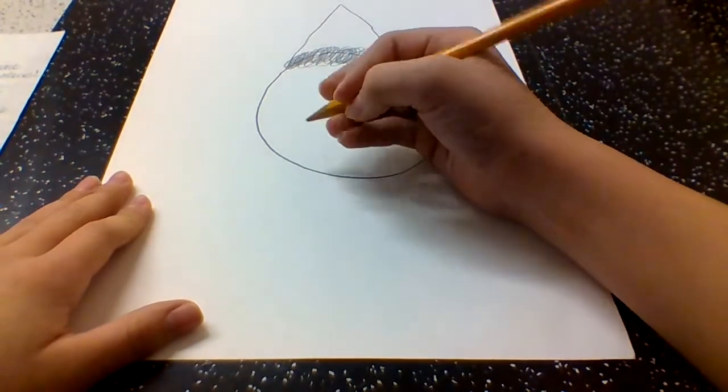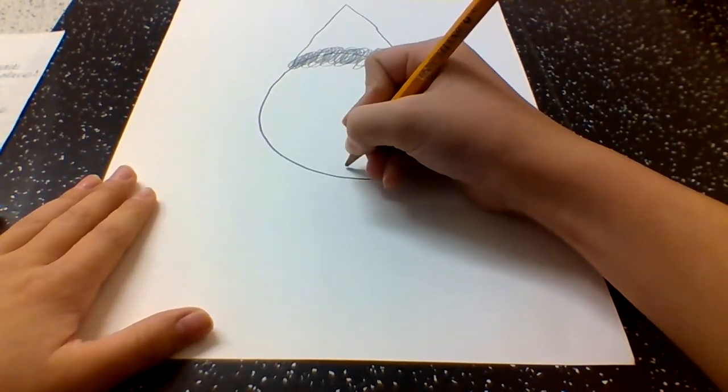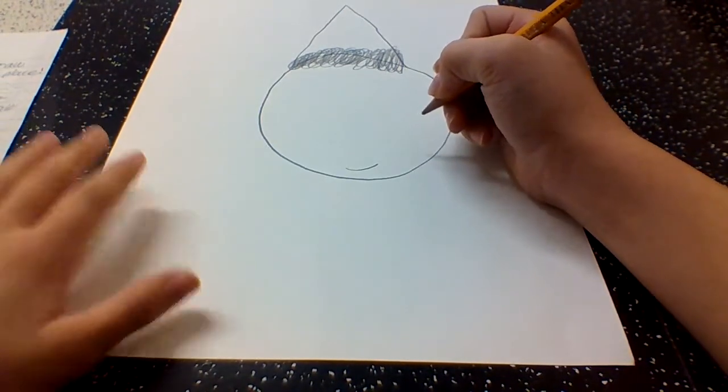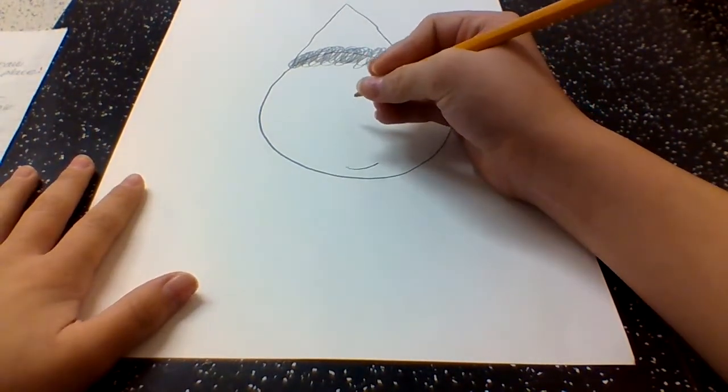Now draw a smile dome by the bottom of your circle on the inside. Now draw a squiggly line under your scribble.